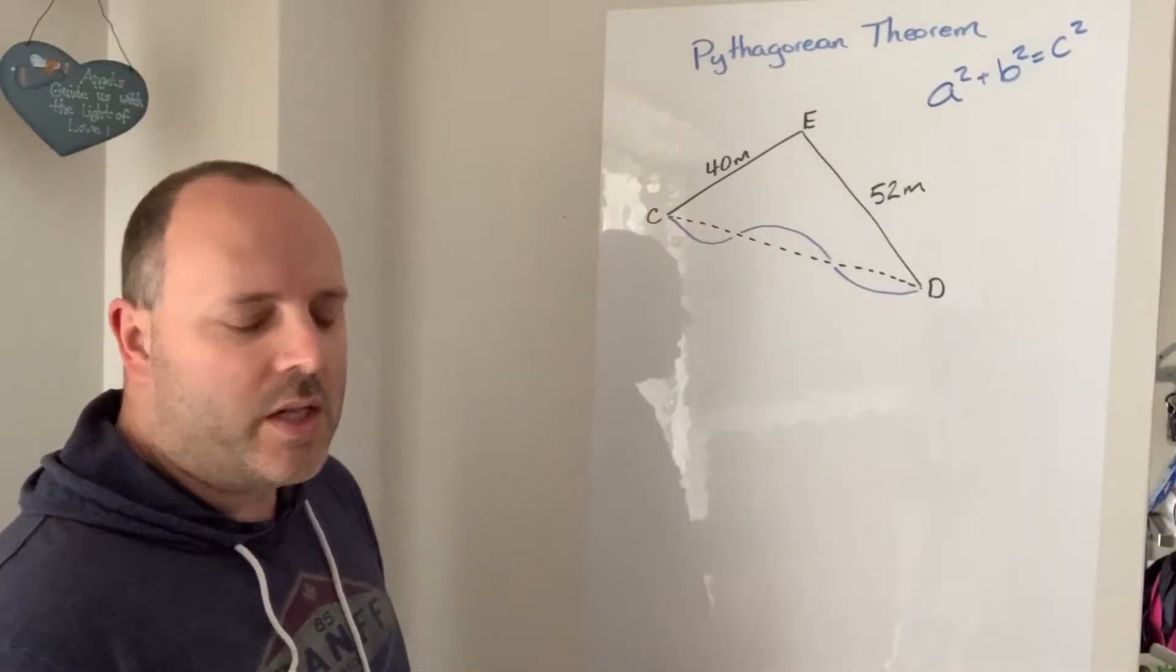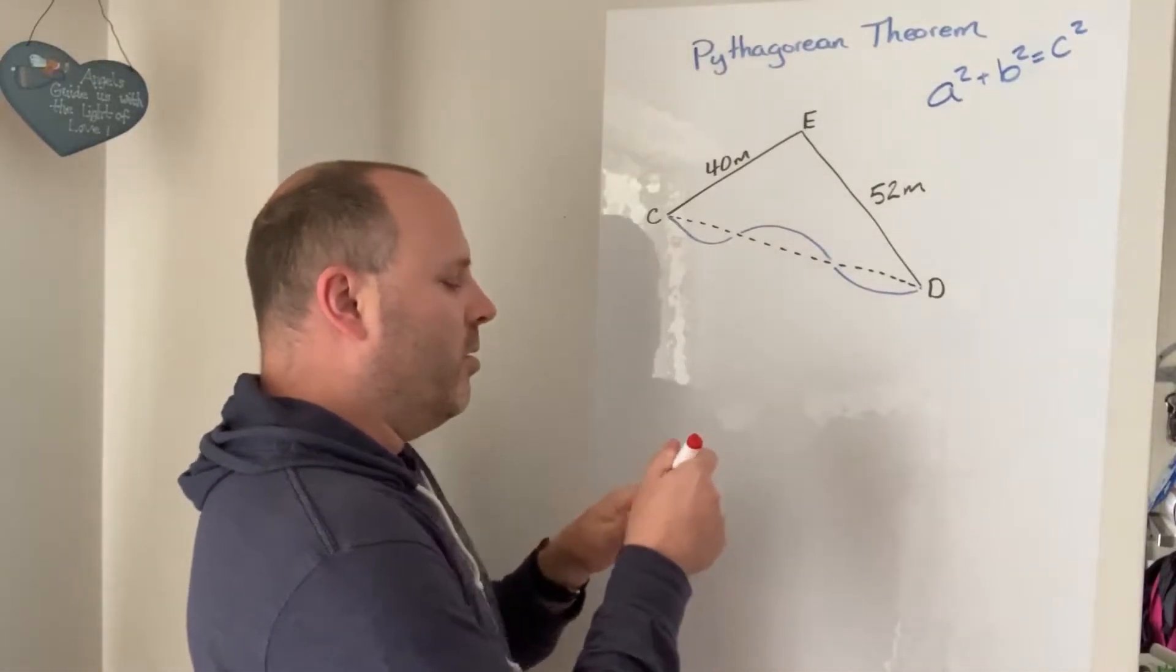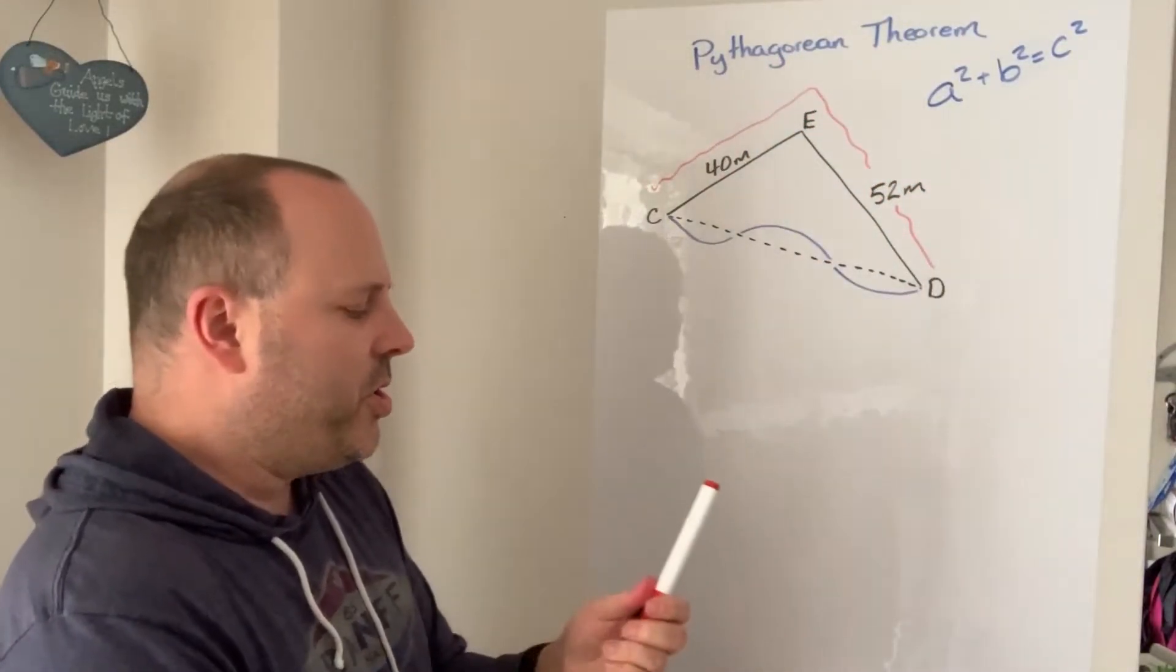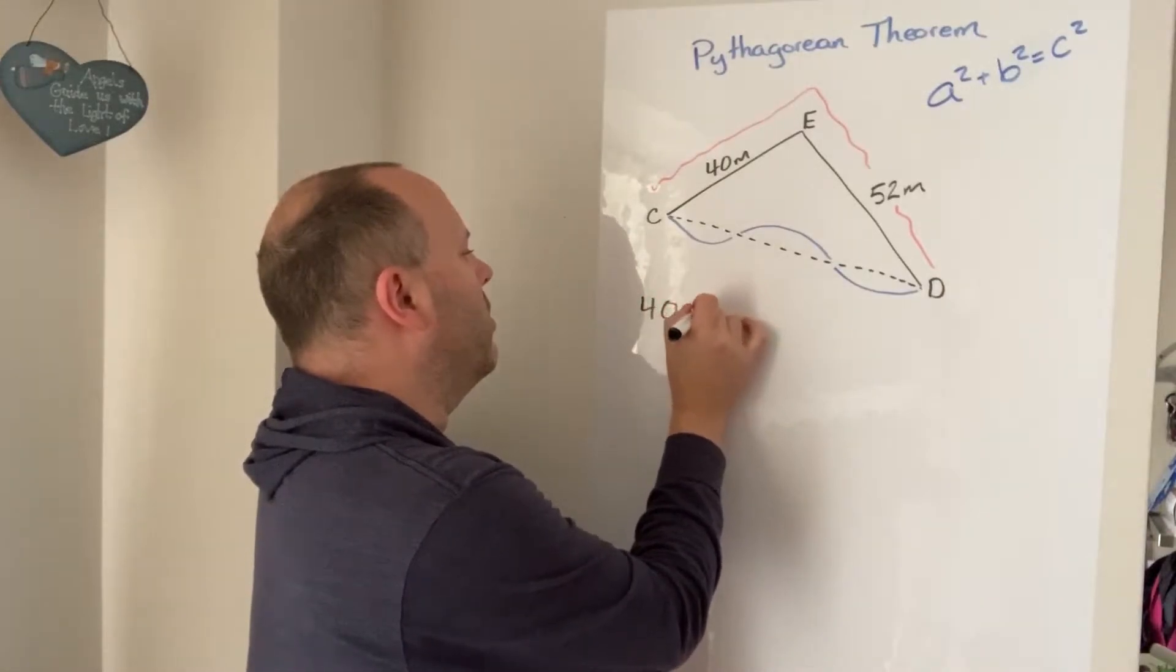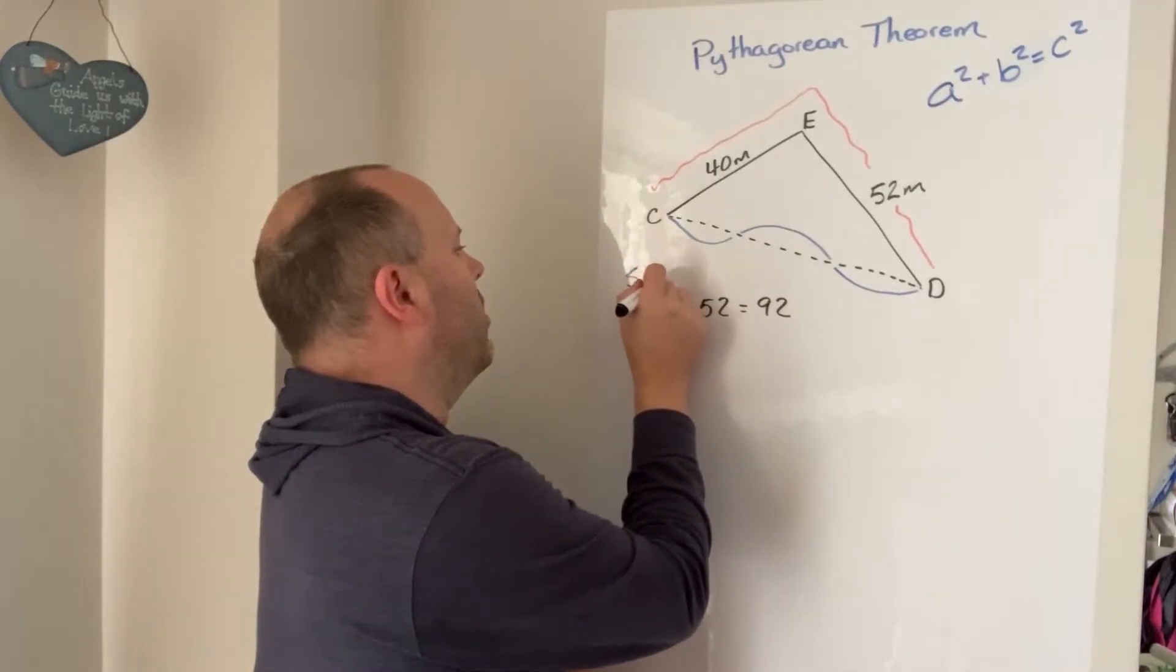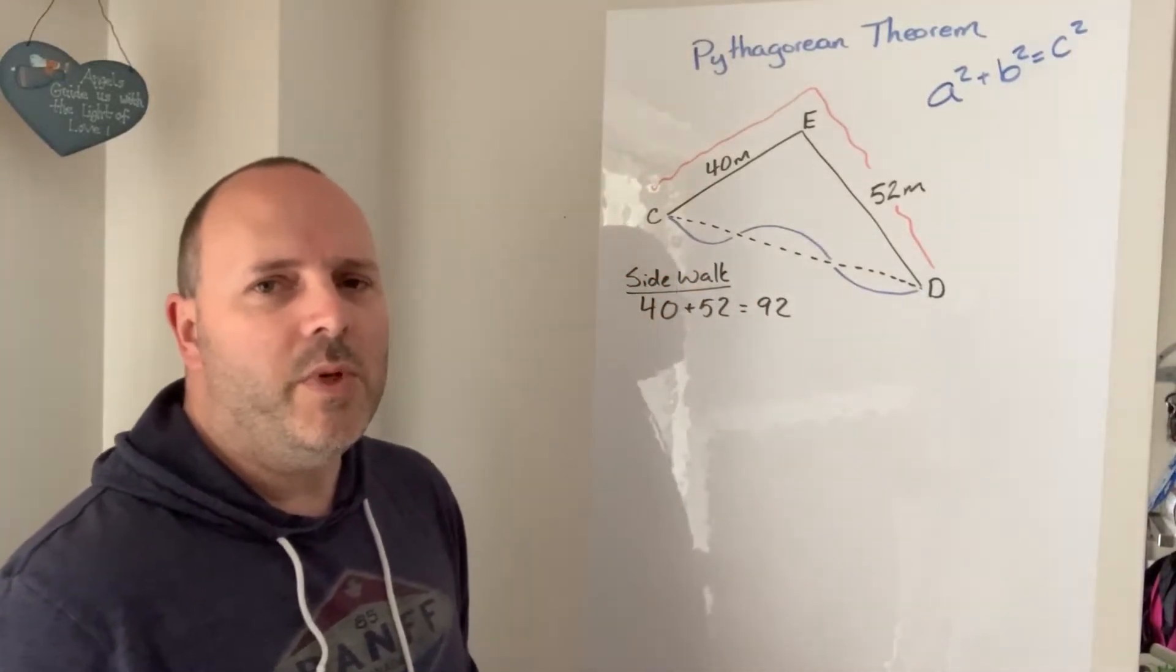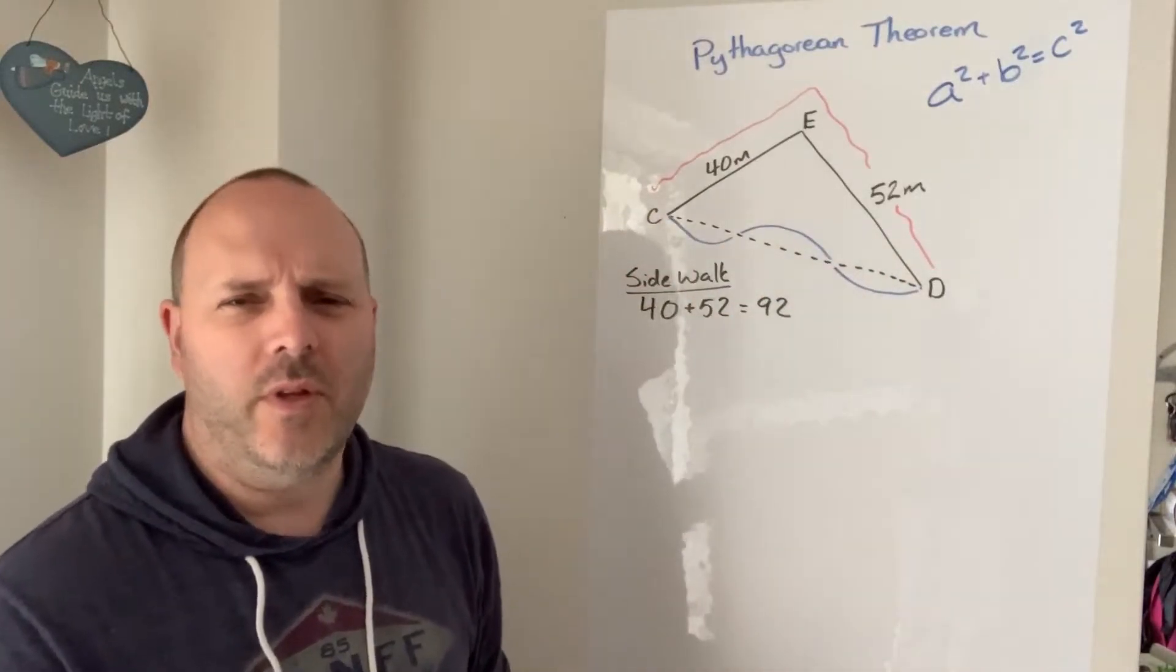So the distance if I walked on the sidewalks would be, I'd be walking this way, 40 meters plus 52 meters. So if I take the sidewalk it's 92 meters. Now how far is it from C to D if I follow the path roughly?